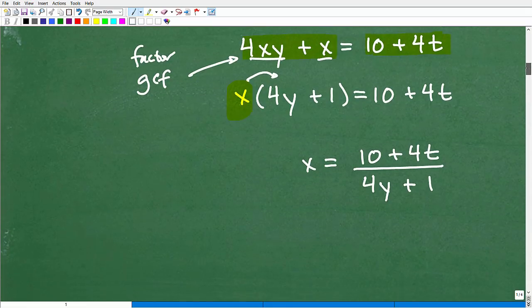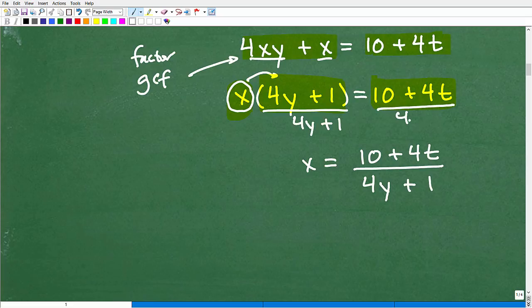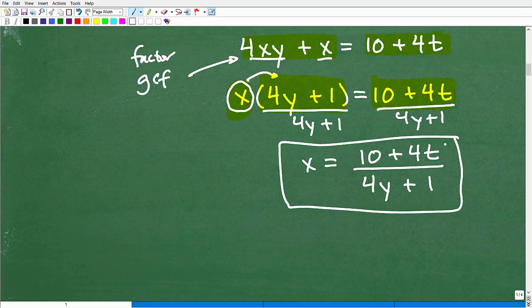So this is good, right? But the only way I could have factored this out is I've got to have these guys next to one another. Then I could factor out the GCF. Okay, so at this point in the problem, remember, X is the only thing that you're treating as a variable. So this whole thing, just think of it as a number. And then we've got this other value over here. And to get X by itself, all I need to do is divide both sides of the equation by this right here, this 4Y plus 1. And doing so leaves me with this: X is equal to 10 plus 4T over 4Y plus 1. And that's it.